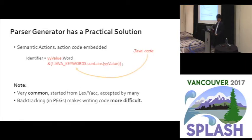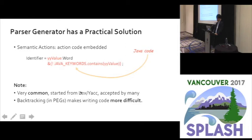Parser generators have a practical solution called semantic actions — action code embedded in a formal grammar. Here are some examples where Java code is embedded in the grammar specification, allowing developers to extend any parser behavior. This technique is very common, probably starting from YACC and adopted by many parser generators. But in the context of parsing expression grammars, backtracking makes writing action code more difficult. Action code can change the parser state, and when backtracking happens, the changed states must be rolled back together — that's very difficult.